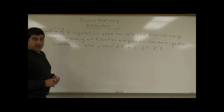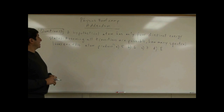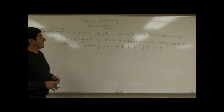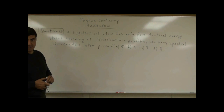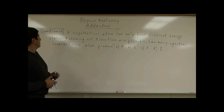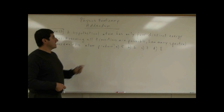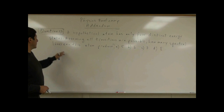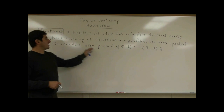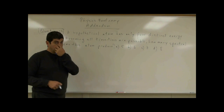Now we're solving question number 13. A hypothetical atom has only four distinct energy states. Assuming all transitions are possible, how many spectral lines can this atom produce?